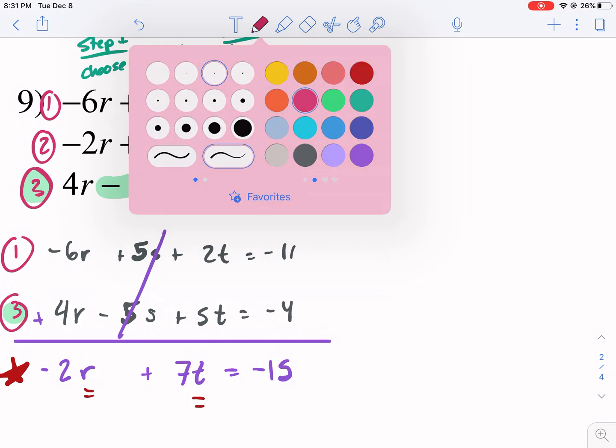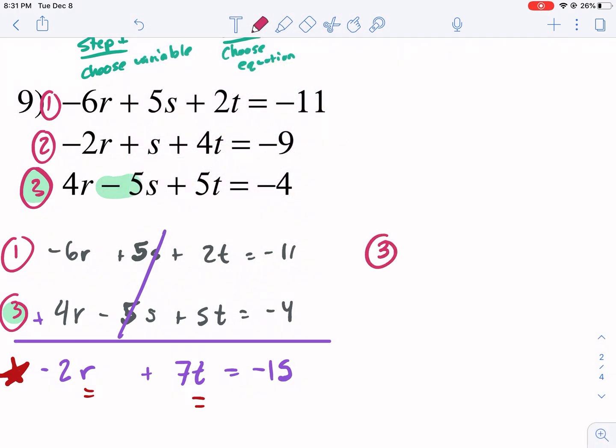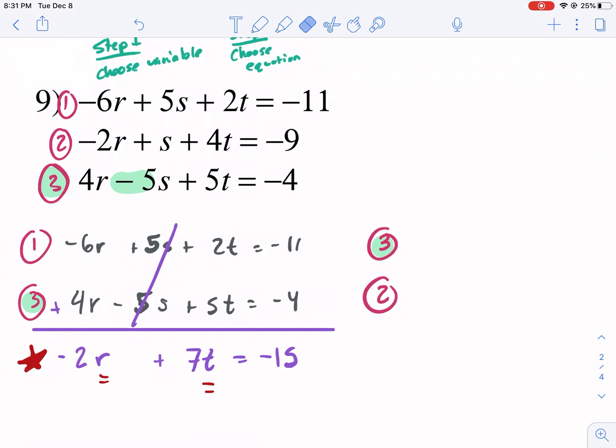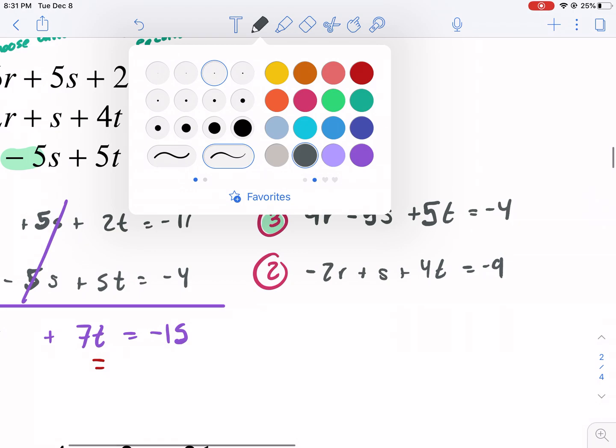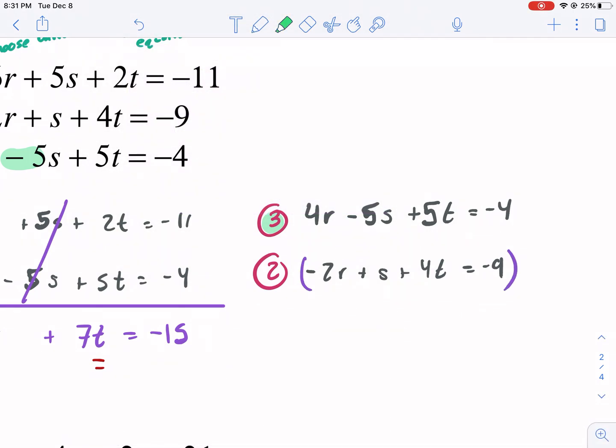Okay. Now I have to repeat this process. So now I need to do it with three and two. Now in this case, my working equation does not need to be modified, and it's my other equation number two that needs to be modified. So I'm putting it on the bottom. I'm going to rewrite this. So we have four R minus five S plus five T equals negative four. That's my working equation. And then I got this guy negative two R plus S plus four T equals negative nine. Now I need to modify this guy. He's not ready to add to eliminate because the coefficients don't match.